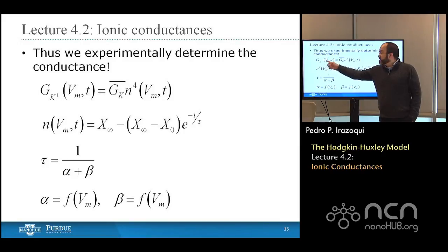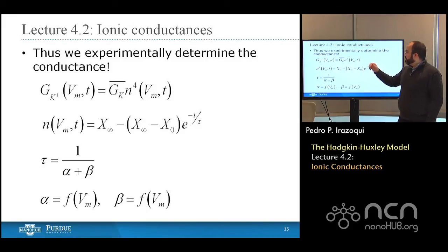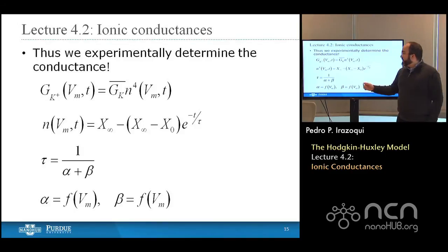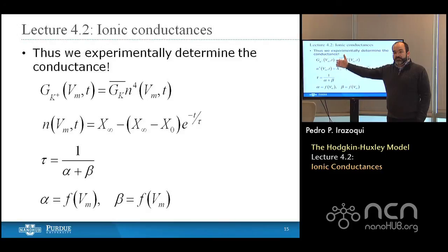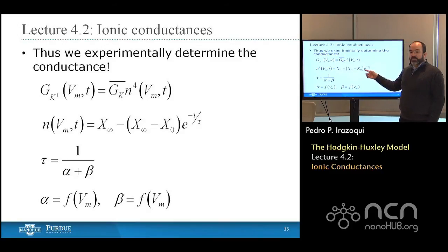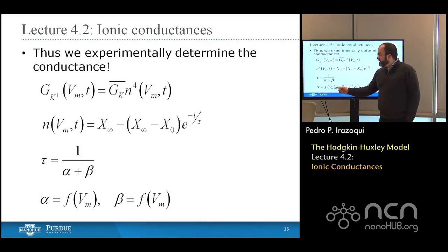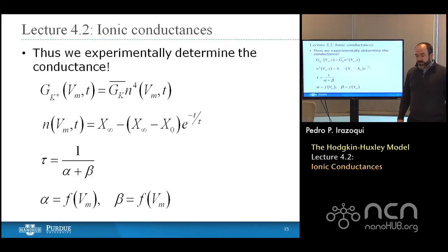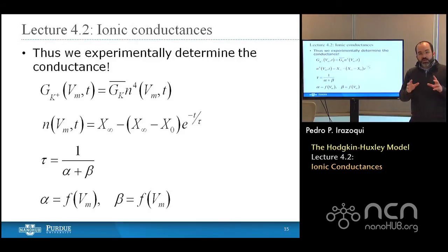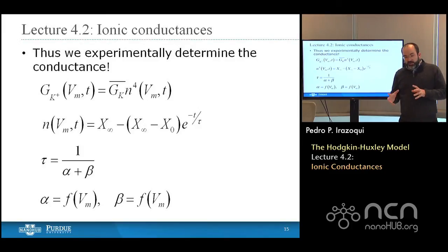This is what Hodgkin and Huxley did. They curve fit G sub K as a function of membrane voltage and time to be equal to a constant GK bar — approximately 36 millisiemens per centimeter — multiplied times N raised to the fourth power, where N is a function of membrane voltage and time of the form X-infinity minus (X-infinity minus X-naught) times e to the minus t over tau, where tau is one over alpha plus beta, and alpha and beta are both functions of membrane voltage.